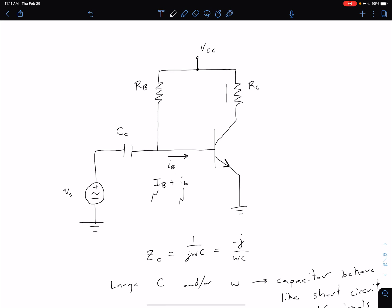Similar thing for our collector current—it's going to have a DC and an AC component. Our voltages as well: VCE is going to have an AC and DC component, as well as our base emitter voltage VBE.